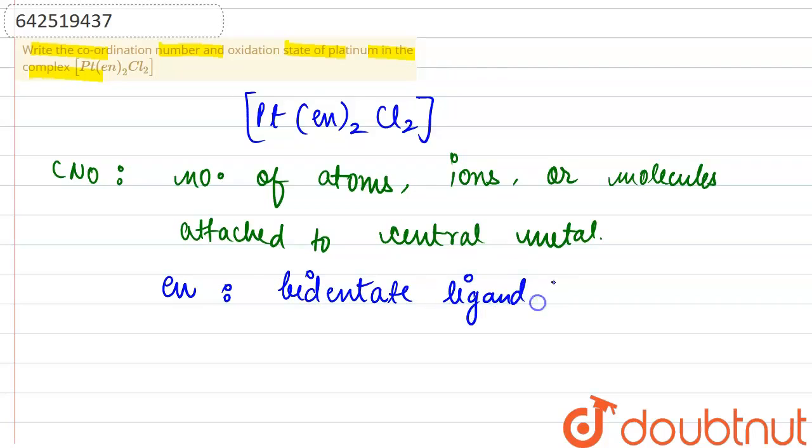Bidentate ligand means it would be having two coordinating sites, two coordinating sites.